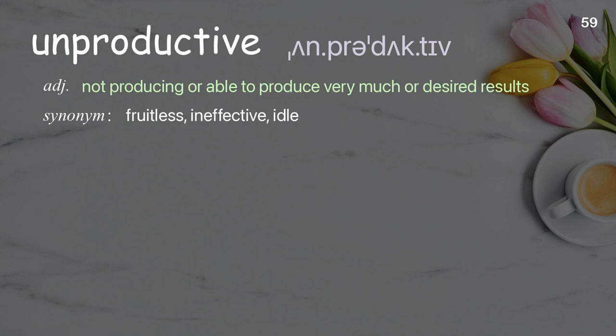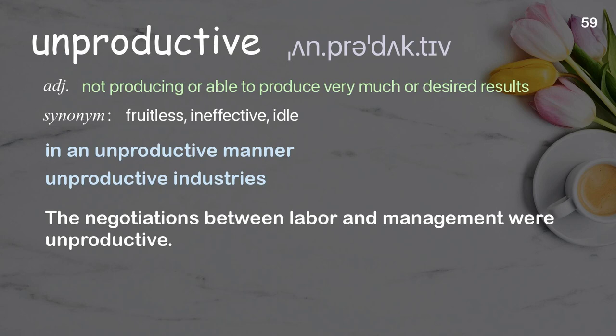Unproductive: not producing or able to produce very much or desired results. Examples: in an unproductive manner; unproductive industries. The negotiations between labor and management were unproductive.